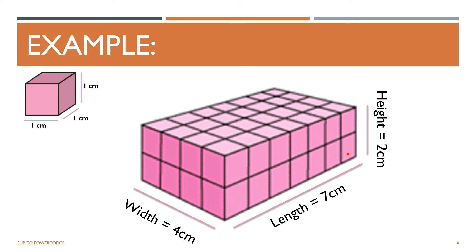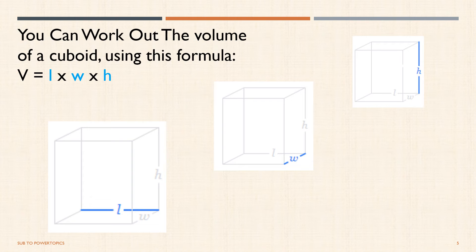So how can we find the volume of this shape? You can work out the volume of a cuboid using this formula: the length times the width times the height.